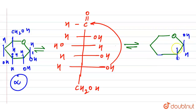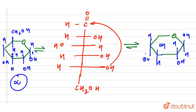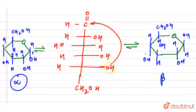In the beta form, the difference is at the first carbon only. Here we have OH instead of H at C1, with CH2OH and H remaining. This is the beta form, and this structure is formed by tautomerization.